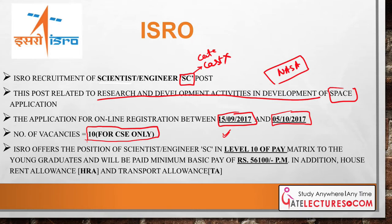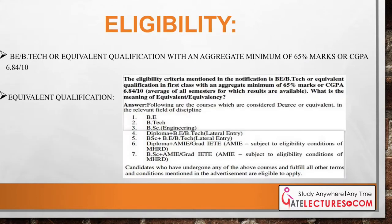ISRO offers the position of Scientist Engineer, which is a Level 10 pay matrix — a Group A officer grade. As a fresher your salary will be fifty-six thousand four hundred rupees per month. In addition to this you will get HRA, that is house allowance, and TA, that is transport allowance.